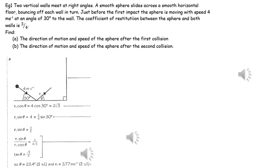In this example, we first need to work out the components parallel and perpendicular to the surface of the velocity before the collision. Once we've done that, we can apply conservation of linear momentum parallel to the initial surface and Newton's experimental law perpendicular to the initial surface. This will give us two equations involving V1 and theta, which we can solve simultaneously.